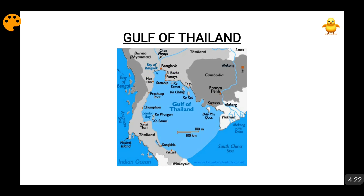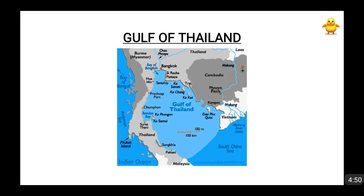Moving forward, we come to the Gulf of Thailand, also known as the Gulf of Siam. The Gulf of Thailand is bordered by three countries: Cambodia, Vietnam, and Thailand. It covers an area of around 320,000 square kilometers. The Chao Phraya River also flows into the Gulf of Thailand.